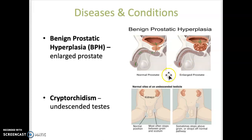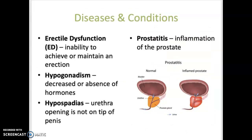Cryptorchidism is undescended testes. Erectile dysfunction is the inability to achieve or maintain an erection. Hypogonadism is a decrease or lack of production of hormones by the gonads — in the case of a male, it would be the testes. Hypospadias is when the urethral opening is located underneath the penis. Prostatitis is inflammation of the prostate gland.